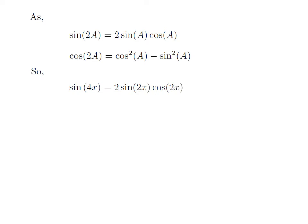So, application of the first identity gives us sin of 4x is equal to 2 times sin of 2x into cosine of 2x. Now, let's further expand the above expression.